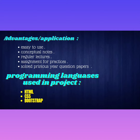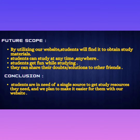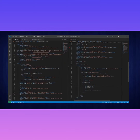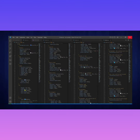Programming languages used in this project are HTML, CSS, and Bootstrap. These are our future scope for the website. This is the flowchart and algorithm required to create the basic structure of the website. This is the program which we created in HTML and CSS for our website.